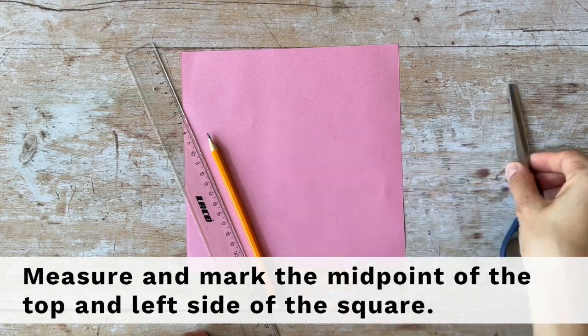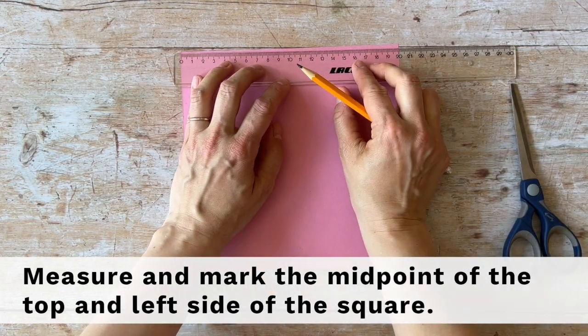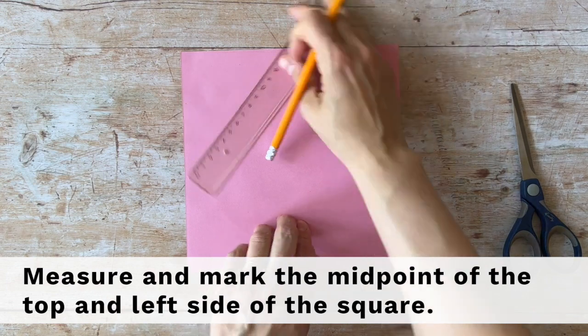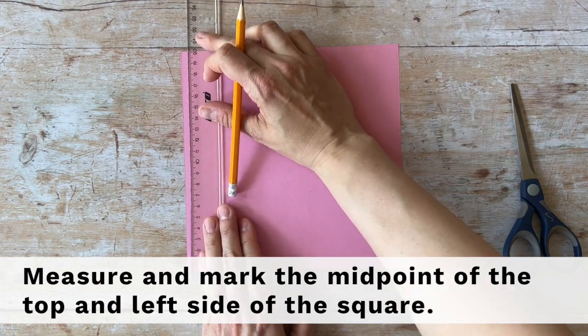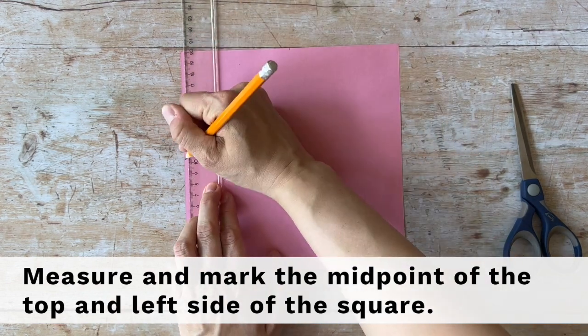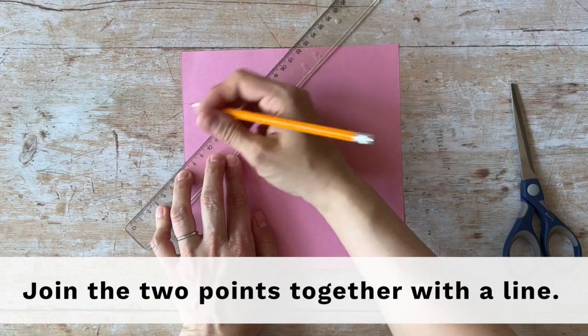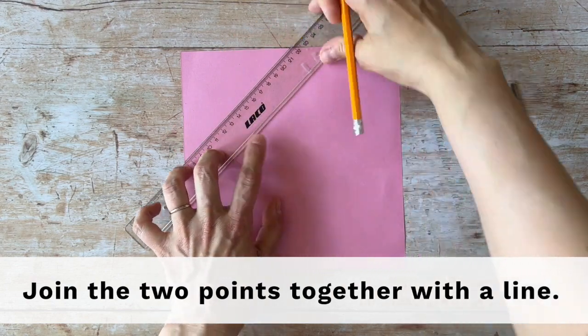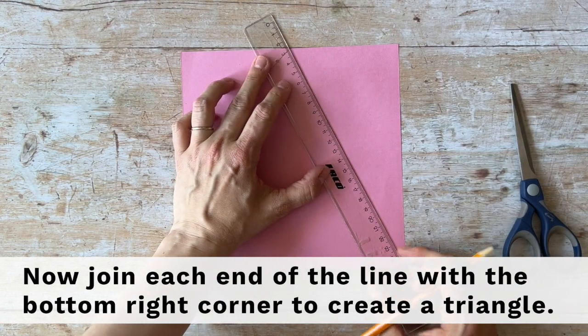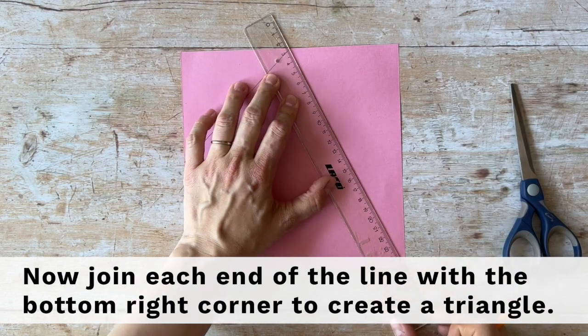Measure and mark the midpoint of the top and left side of the square. Join the two points together with a line. Now join each end of the line with the bottom right corner to create a triangle.